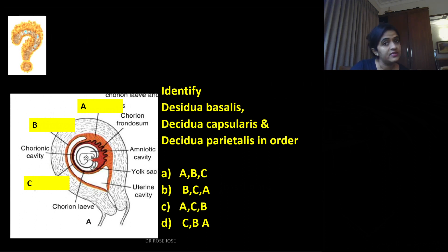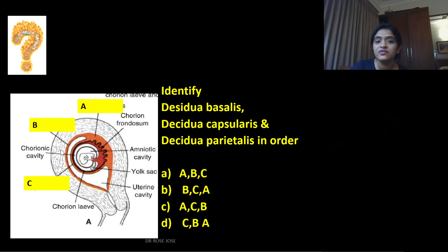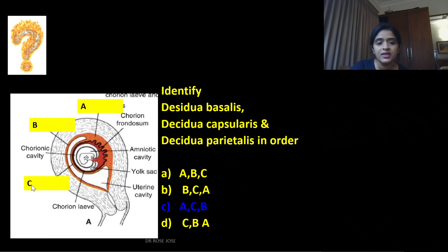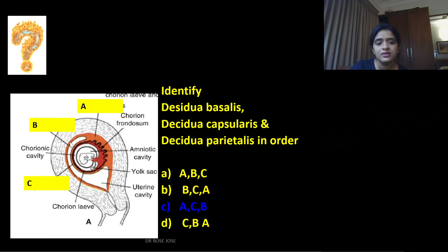If you are given a diagram like this — I've done a detailed session, please do watch that first before the quick recap — identify the regions colored as A, B, C: which is decidua basalis, which is decidua capsularis, and which is decidua parietalis. A is decidua basalis, the part attached to the endometrium. C is decidua capsularis, the covering over the embryonic pole. B is the remaining endometrial wall, that is decidua parietalis.